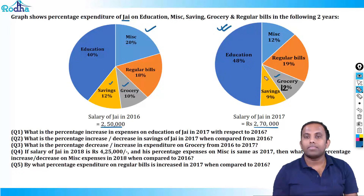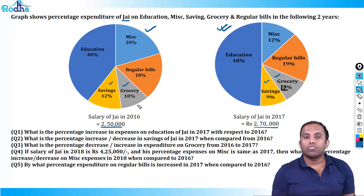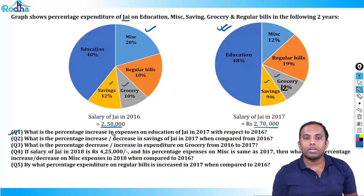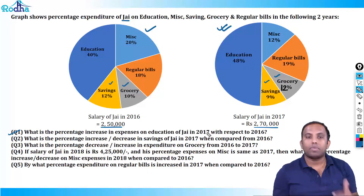Savings here is 9% of 2,70,000. So we discuss this concept here. The first question is: what is the percentage change — specifically the percentage increase in the expenses on education of J in 2017 with respect to 2016?